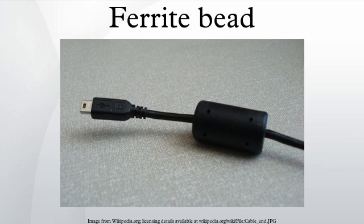Overview: ferrite beads prevent interference in two directions, from a device or to a device. A conductive cable acts as an antenna; if the device produces radio frequency energy, this can be transmitted through the cable, which acts as an unintentional radiator. In this case the bead is required for regulatory compliance, to reduce EMI.